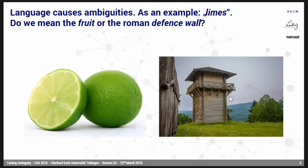If you look at a small example, language often causes ambiguities. If we just have this string — 'limes' — there is a question of whether we mean the fruit or the Roman defensive wall. If we just have some kind of context, like some images, it's really easy to choose. But if not, what will you do?